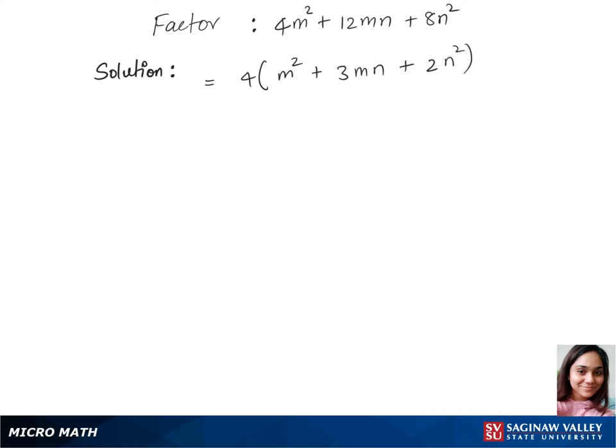Now we can find factors for m square and 2n square. For m square, we have m times m. And for 2n square, we have 2n times n.